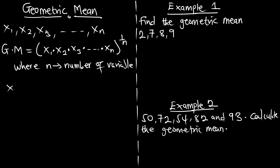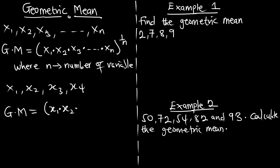So if we have four variables x1, x2, x3, and x4, the geometric mean GM is going to be x1 multiplying x2 multiplying x3 multiplying x4, raised to the power 1 over 4 — since n equals 4. And with this we get our geometric mean. So it is very simple.